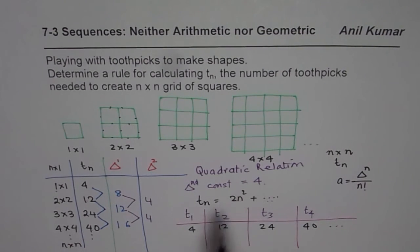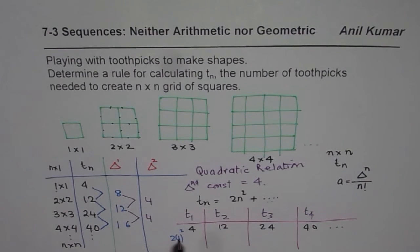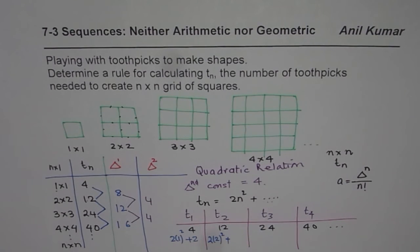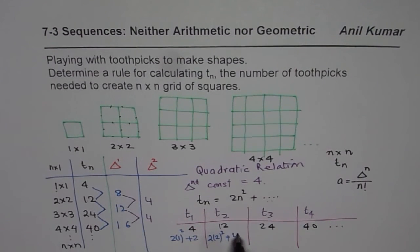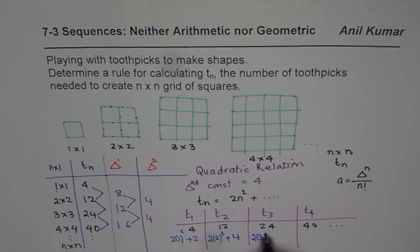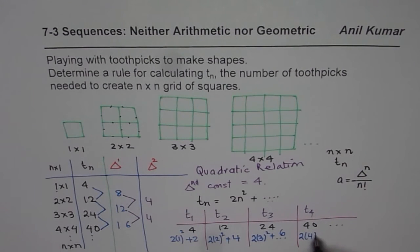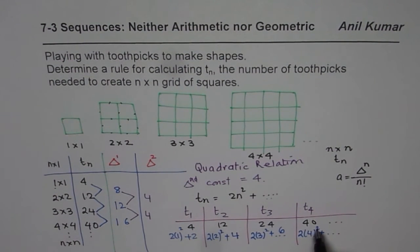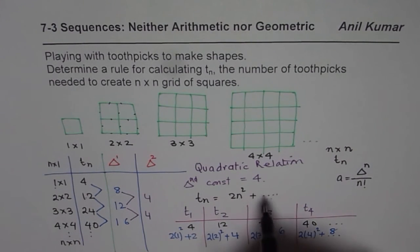If I write n as 1, I get 2 times 1 square. How do I get 4? 2 times 1 is 2 plus 2 will give me 4. Now this time n is 2, so I will write 2 times 2 square plus what gives me 12. 2 square is 4, 4 times 2 is 8, 8 plus 4 is 12. Here 2 times 3 square plus what is 24. 3 square is 9, 9 times 2 is 18, 18 plus 6 is 24. How about 40? 4 square is 16, 16 times 2 is 32, and 32 plus 8 is 40.